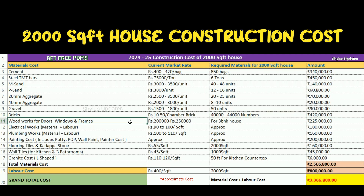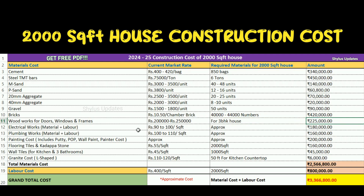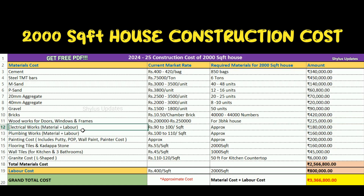Woodworks for doors, windows, and frames: ₹2,00,000 to ₹2,50,000. The total amount for woodworks is ₹2,25,000. Electrical works: ₹90 to ₹100 per square feet. The total amount for electrical work is ₹1,80,000. This electrical work cost covers both material and labor.